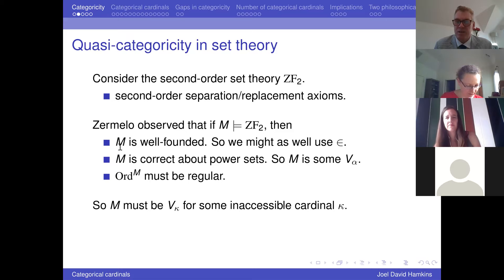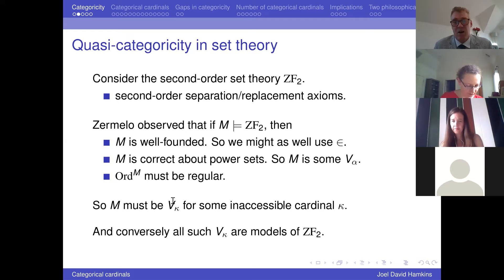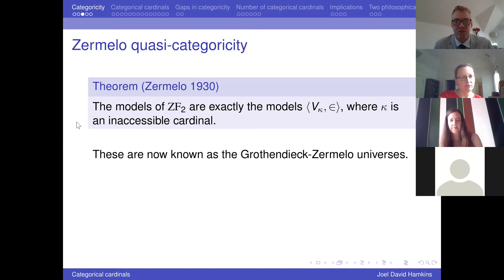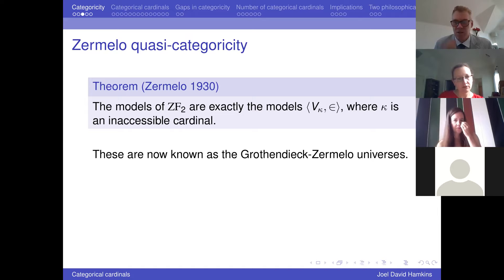Conversely, all models like that are models of second-order ZF. So another way of saying it: the models of second-order set theory are exactly the V_kappas where kappa is an inaccessible cardinal. This isn't quite a categoricity result because we might have a lot of different inaccessible cardinals — it's what's called a quasi-categoricity result. These are now known as the Grothendieck–Zermelo universes — Grothendieck's use of them was really a rediscovery of Zermelo's 1930 analysis.